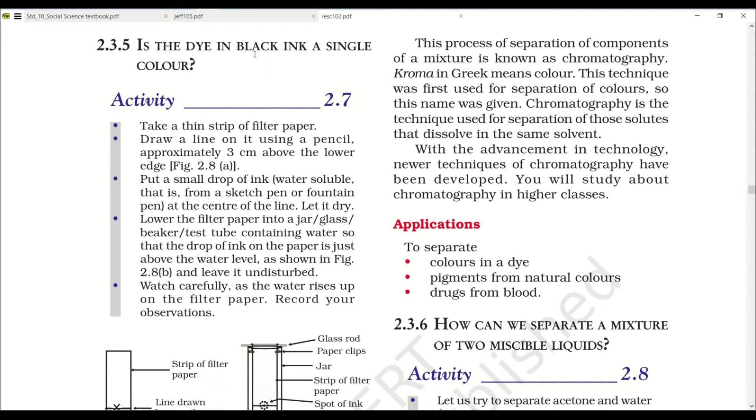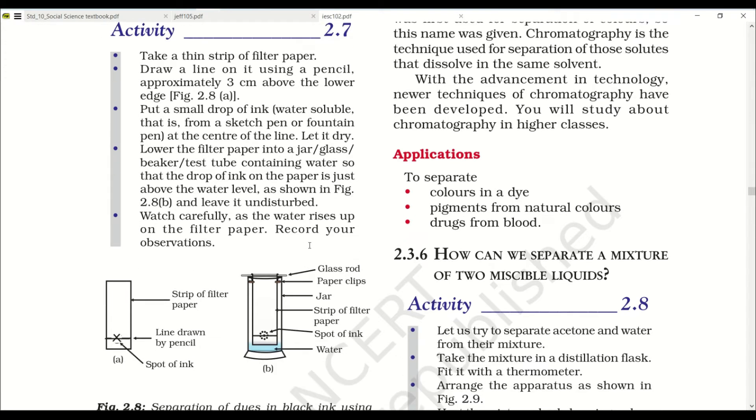Is the dye in black ink a single color? Let's see through an activity. Take a thin strip of filter paper. Draw a line on it using a pencil approximately 3 cm above the lower edge. Put a small drop of ink, water soluble from a sketch pen or fountain pen, at the center of the line. Let it dry. Lower the filter paper into a jar or beaker containing water so that the drop of ink on the paper is just above the water level as shown in figure 2.8b. Leave it undisturbed. Watch carefully as the water rises up on the filter paper. Record your observations.